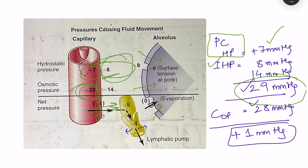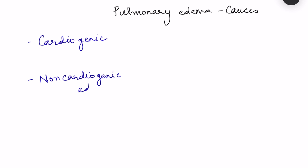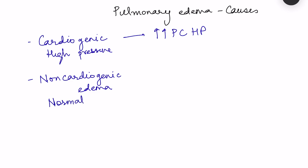Based on this, the causes of pulmonary edema are broadly classified into two types: cardiogenic edema and non-cardiogenic edema. In cardiogenic edema there is increase in the pulmonary capillary hydrostatic pressure, so it is also known as high pressure edema. In non-cardiogenic pulmonary edema, pressures are normal - it is known as normal pressure pulmonary edema.